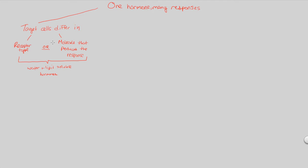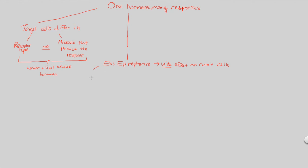A great way to ground this concept is with the hormone epinephrine, otherwise known as adrenaline. Epinephrine has a very wide effect on certain cells, and that effect depends on the target cell, the receptor type, and the molecule that produces the response. This gives us a superb example of one hormone with many responses.